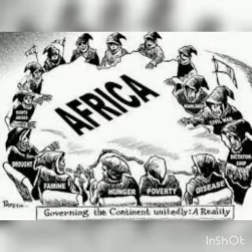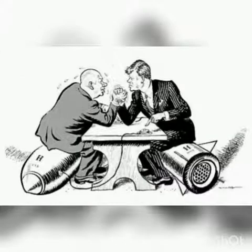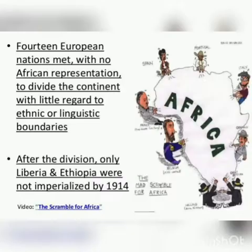The nations involved in the partition of Africa were: France, Portugal, Italy, Belgium, Britain, Germany, and Spain. As a task, write the reasons for the scramble for colonies.